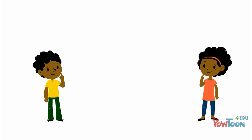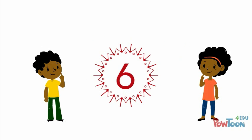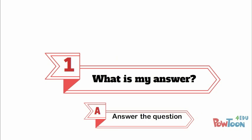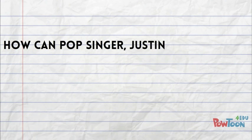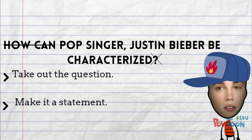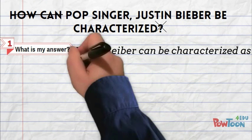So, what are the steps to answering these questions? There are six. Step one: ask yourself, what is my answer? Answer the question — take out the part that makes it a question and turn it into an answer. For example, how can pop singer Justin Bieber be characterized? Take out the question and make it a statement. A J.B. hater could say: Justin Bieber could be characterized as a public nuisance.